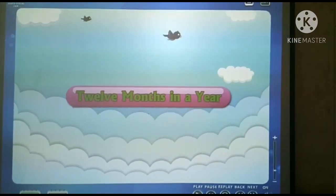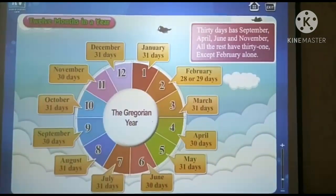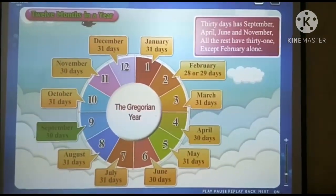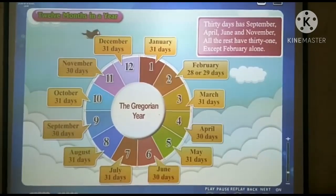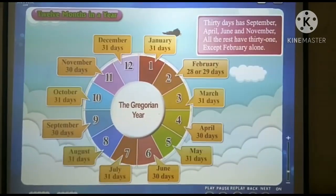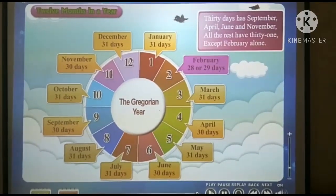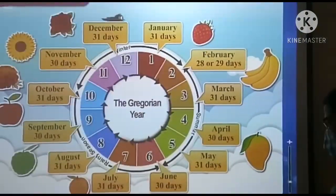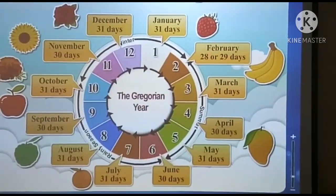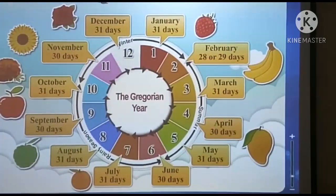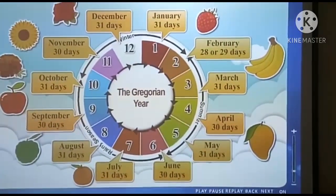Twelve months in a year. Thirty days have September, April, June and November. All the rest have 31, except February alone.